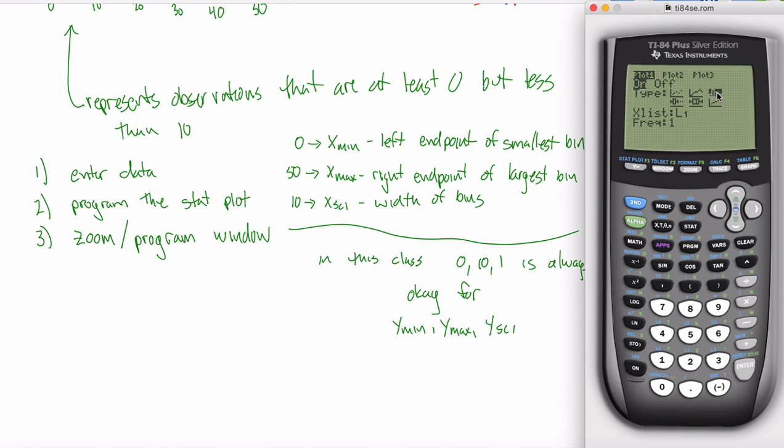Last time we saw that this third type here was our histogram. We learned how to make one with that. What we're going to do this time is learn which one of these icons represents a box plot. In this class, it'll be this fourth type right here. The fourth one and the fifth one kind of look similar. The short answer is we'll never use the fifth one in this class. We'll only use the fourth one.